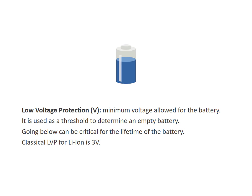The low voltage protection is the minimum voltage allowed for a battery, and which determines the threshold of an empty battery. It is not recommended to go below, as it is critical for the lifetime of a battery. A classical LVP for a lithium-ion battery is 3V.